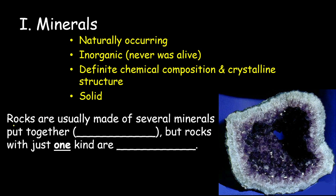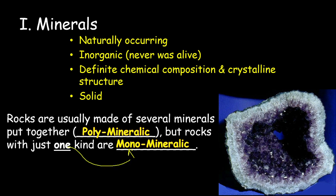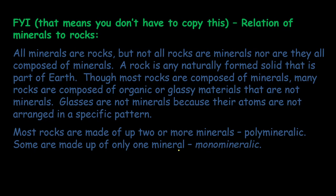Now, rocks are going to be made up of either several minerals — this is known as polymineralic, and these are the most common — or just one kind of mineral, which are known as monomineralic. The prefix mono means one, whereas the prefix poly means many. So polymineralic rocks are made up of many different minerals, whereas monomineralic rocks are made up of only one mineral.